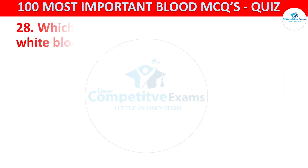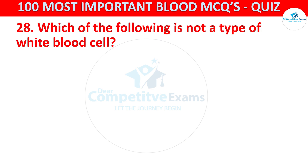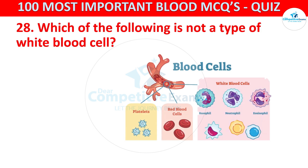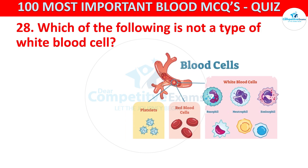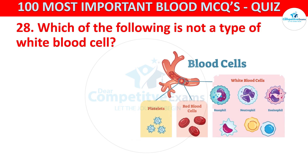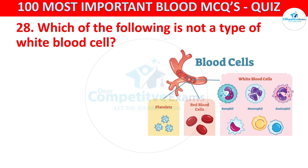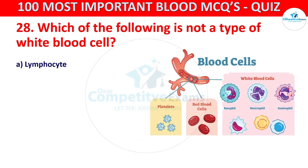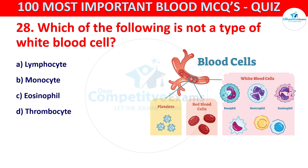Question 28: Which of the following is not a type of white blood cell? Your options are Lymphocyte, Monocyte, Eosinophil, or Thrombocyte.